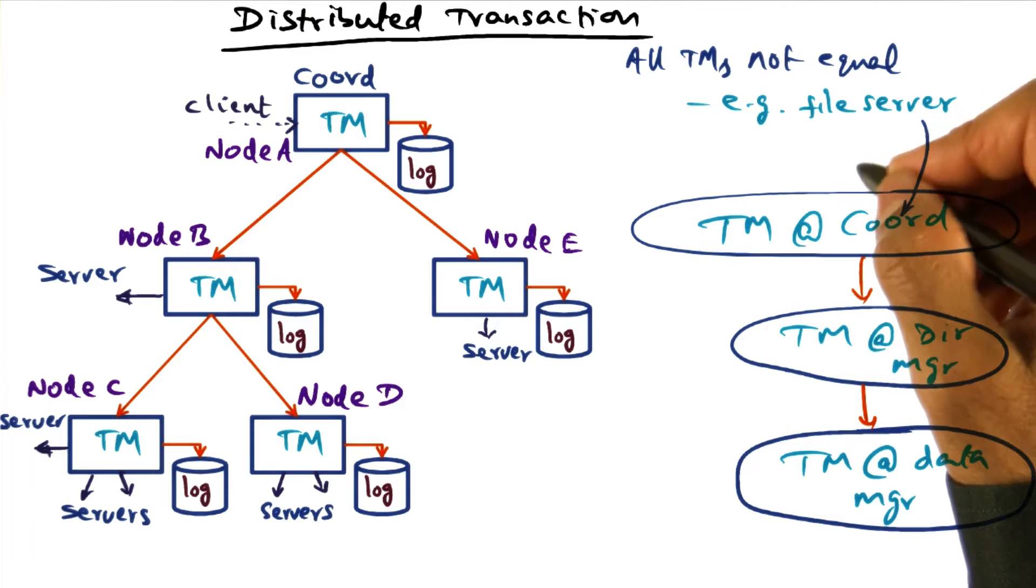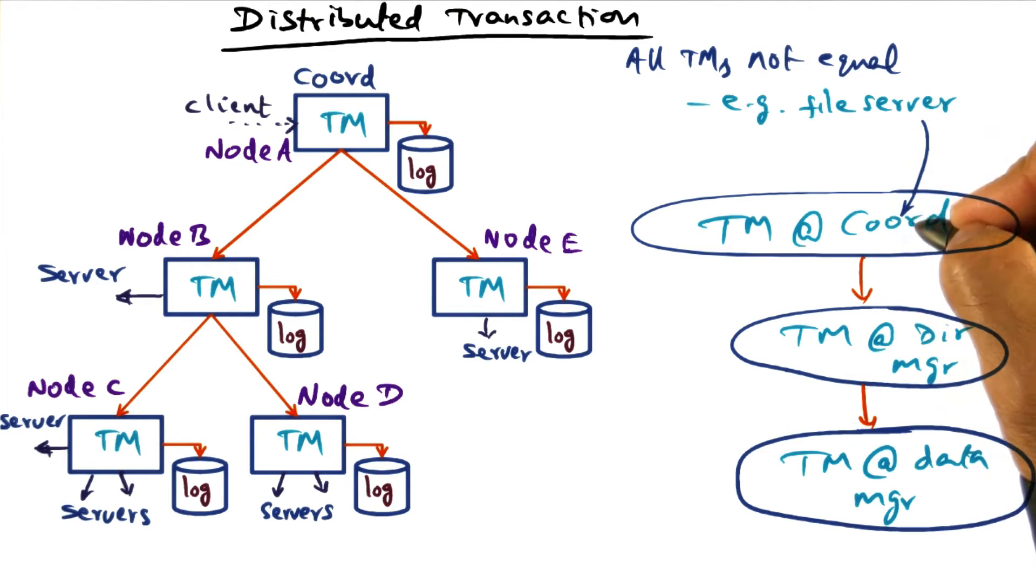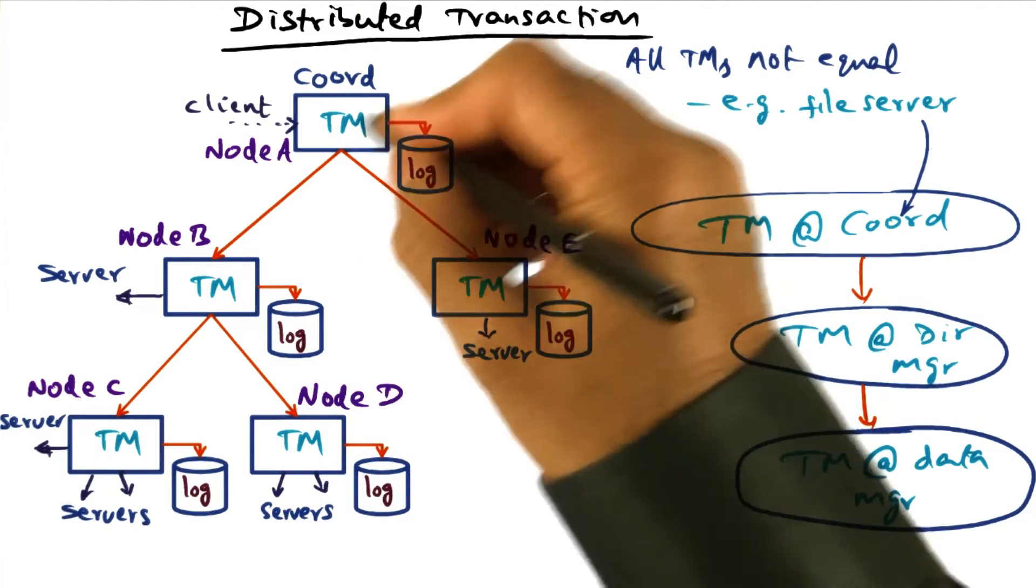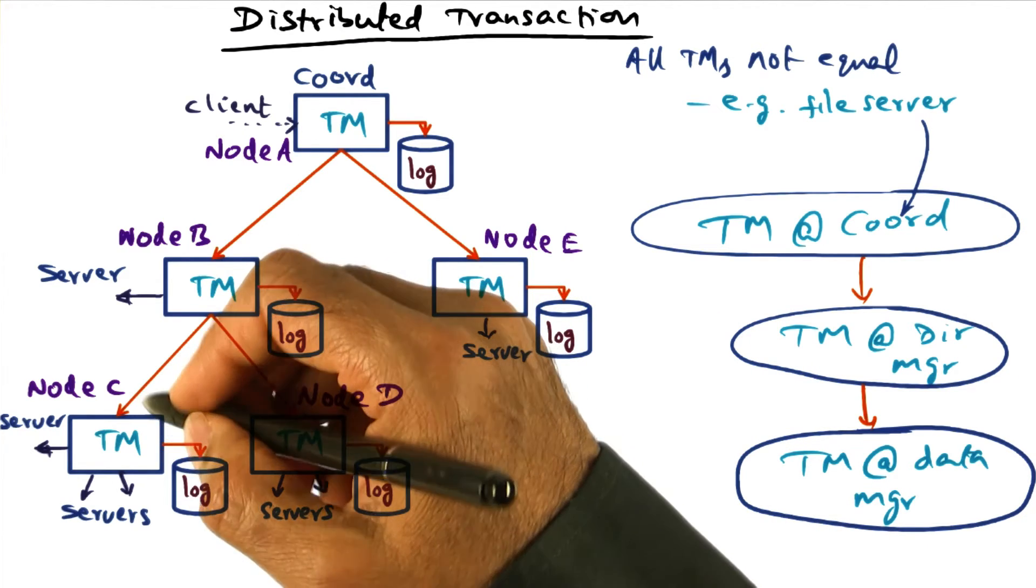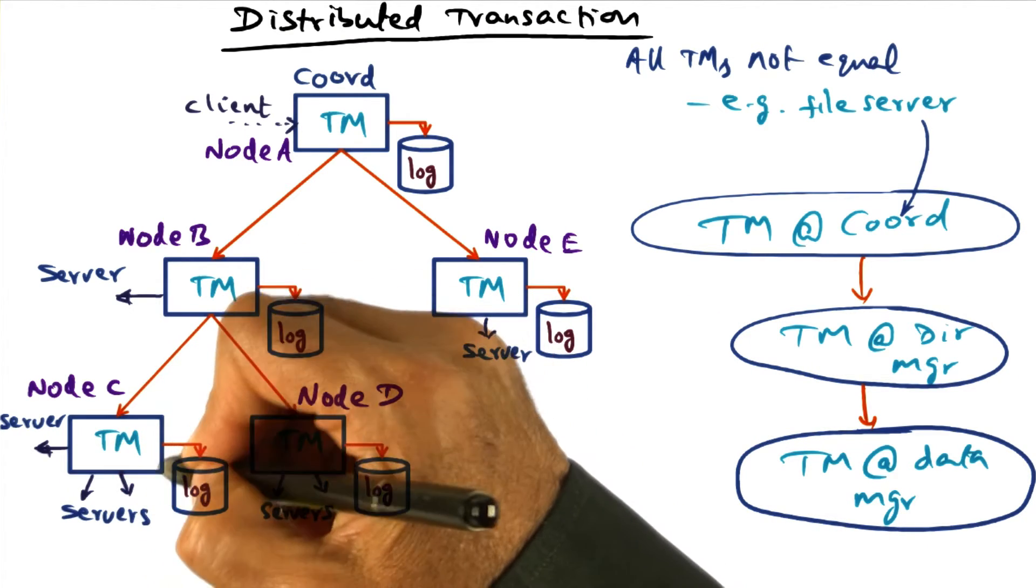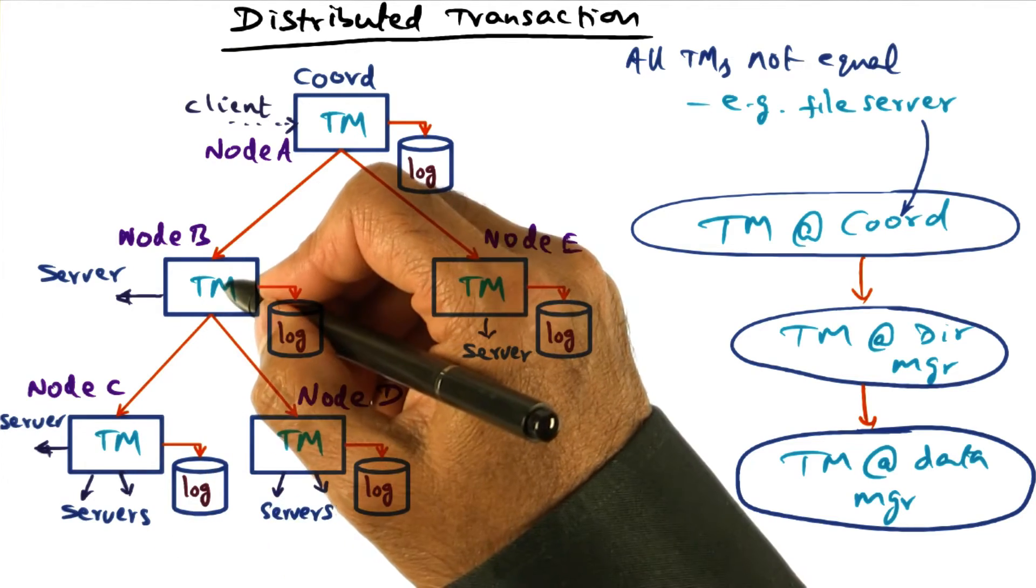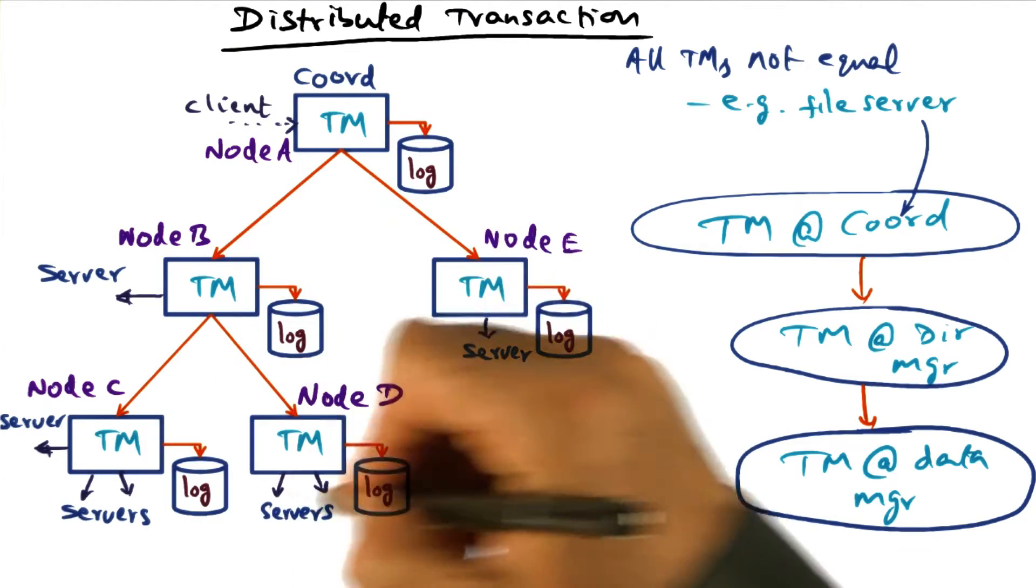And there are different kinds of failures that can happen. There could be a failure of a participant node in the transaction. Or there could be a connection failure. Or it is possible that one of the subordinate transaction managers failed to report. All of these are sources of failure.